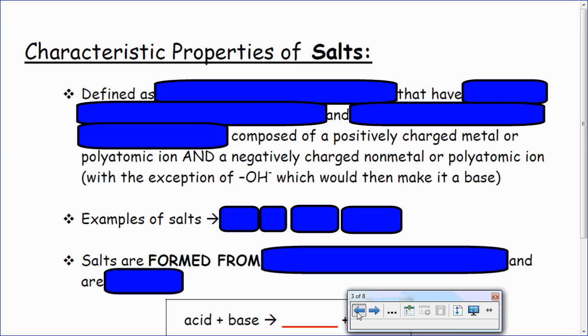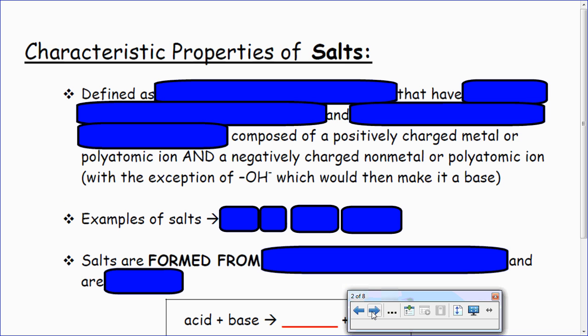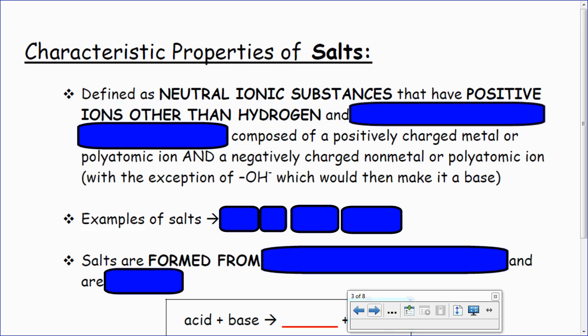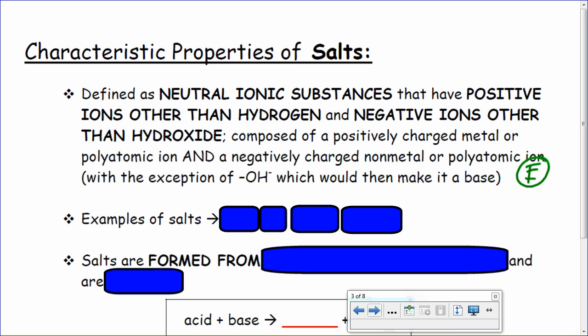Characteristic properties of salt — because that salt is the first piece of interest. Salt is defined as neutral ionic substances that have positive ions other than hydrogen and negative ions other than hydroxide. So table salt, potassium chloride, ice melt — all these different salts are defined as that. Positively charged metal or polyatomic ion and then negatively charged non-metal or polyatomic ion. Remember you find our polyatomic ions on Table E for polyatomic ion names.